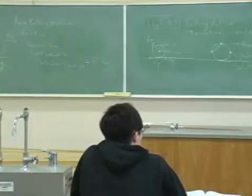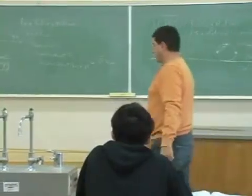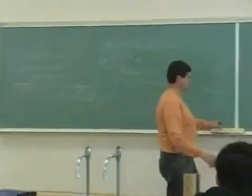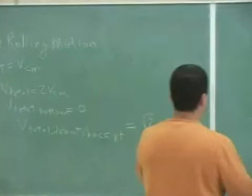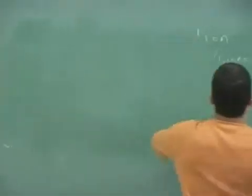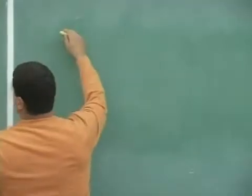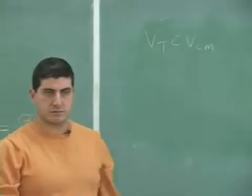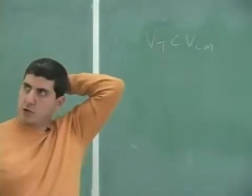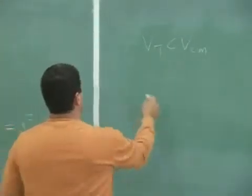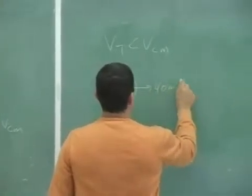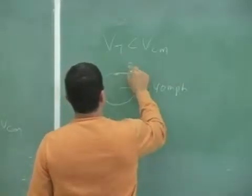Now the other extreme is v tangential is less than v center of mass. That's the other extreme. Here's where you have a situation where the car is, let's say, moving forward 40 miles an hour, spinning at 30 miles an hour.